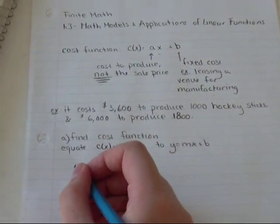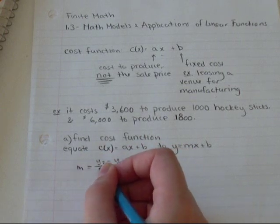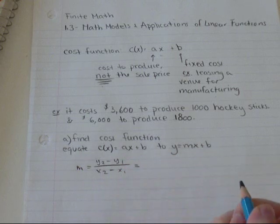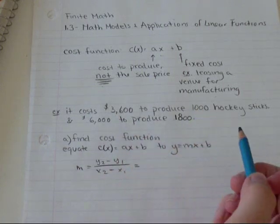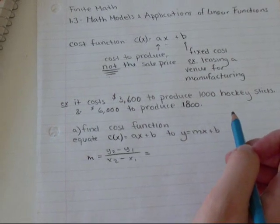So the slope equals y2 minus y1 over x2 minus x1. And I think I'm going to draw this as a point just to make it clear what I'm doing.